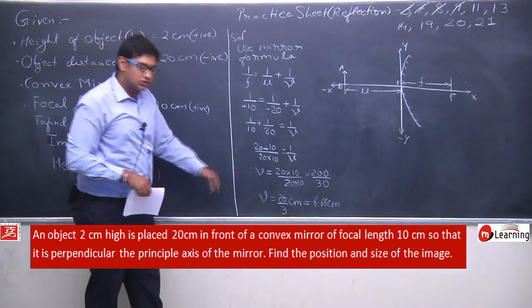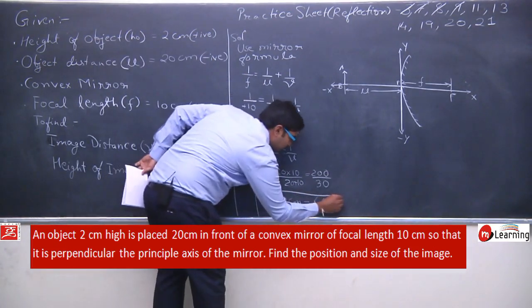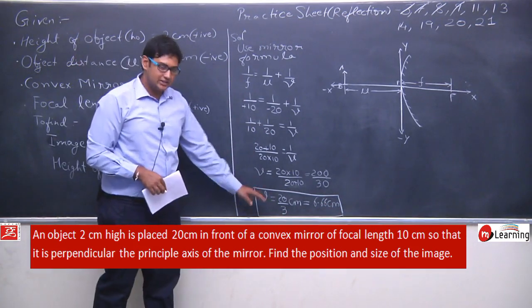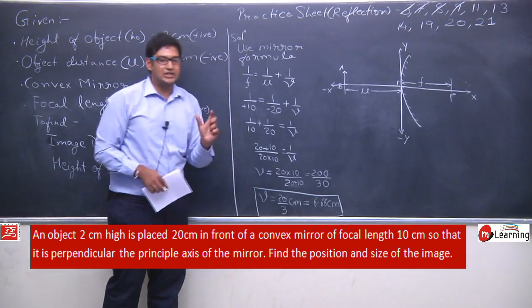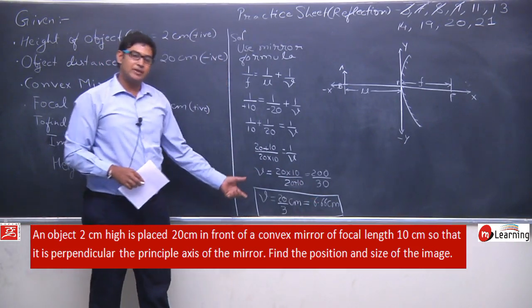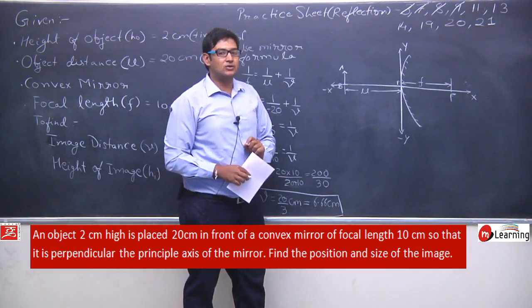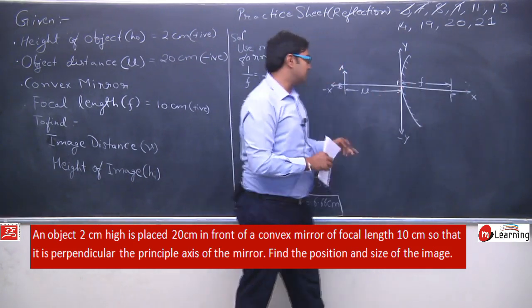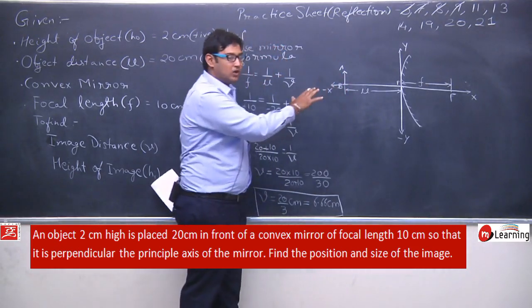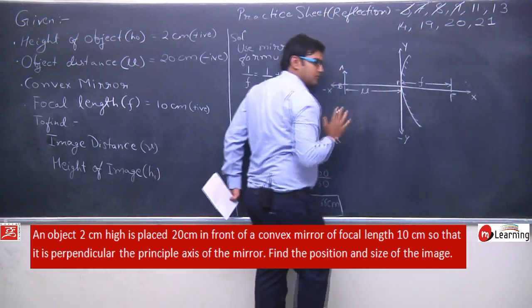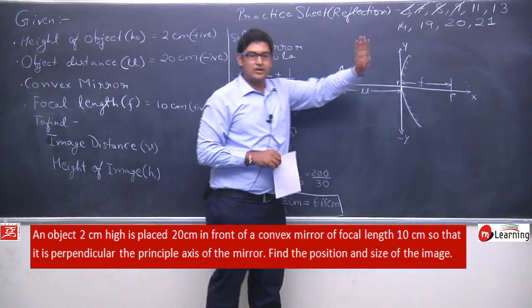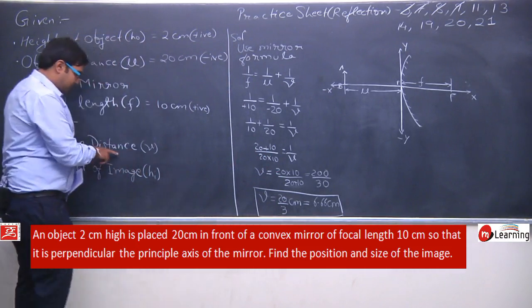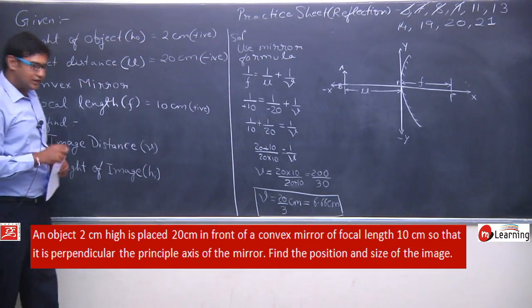We can see that image distance v we calculated is positive — 6.66 is a positive value. If v is positive, the image must be forming in the positive x direction, meaning behind the mirror. In this case, with the object placed here, the image will form on the other side of the mirror. So image distance v = 20/3 cm has been calculated.